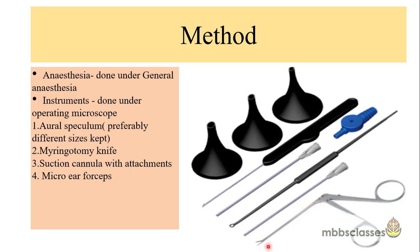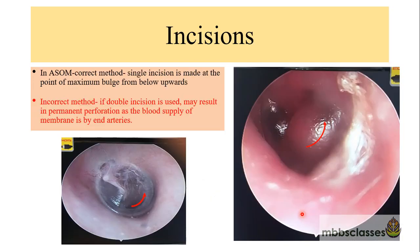This is a picture of the micro ear forceps. There are different types of incisions for Myringotomy and the type of incision depends on the type of disease. The incision for acute otitis media varies from the incision made for otitis media with effusion. Now let us see what type of incision is used in acute suppurative otitis media.